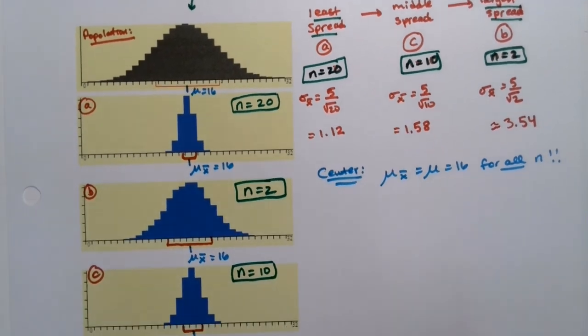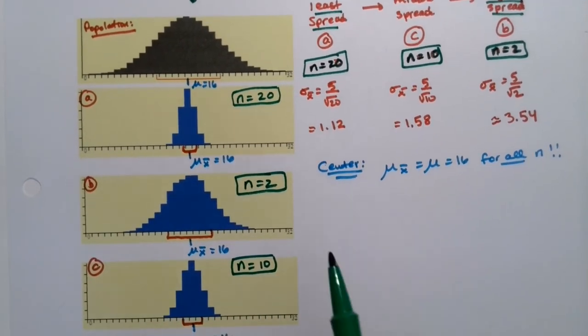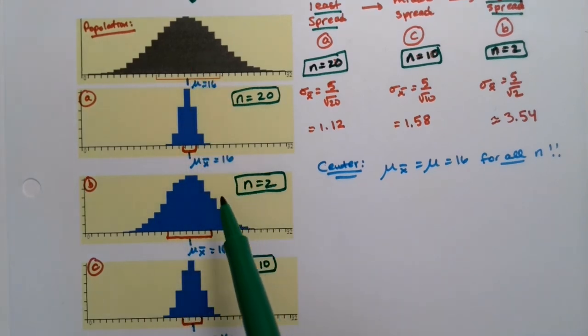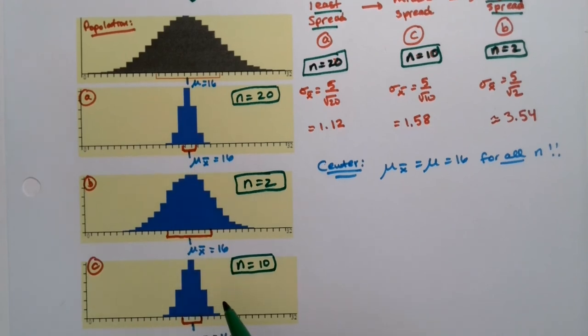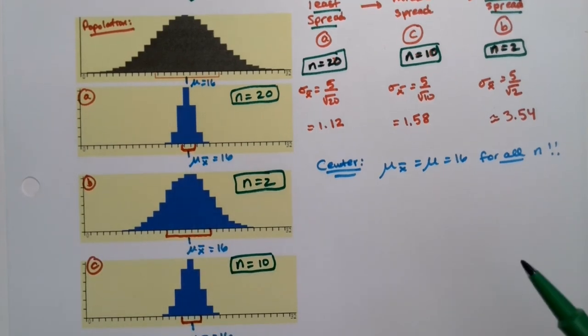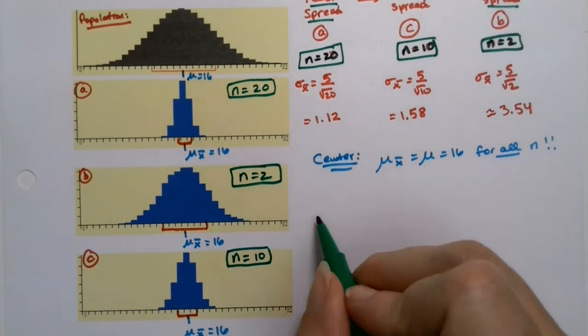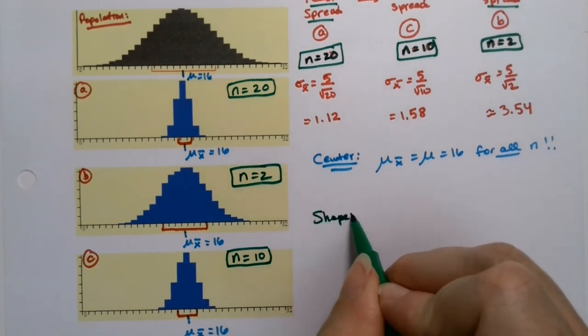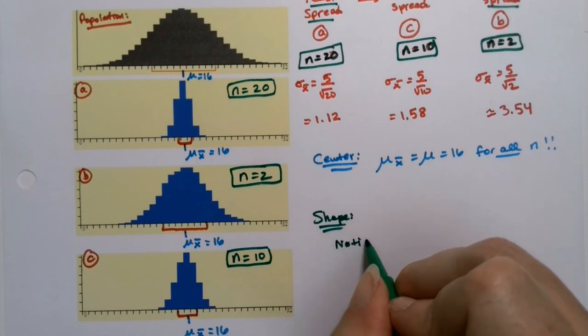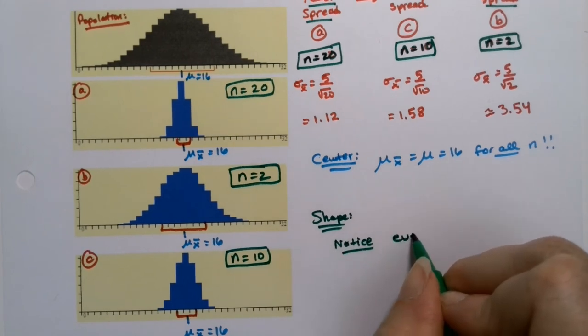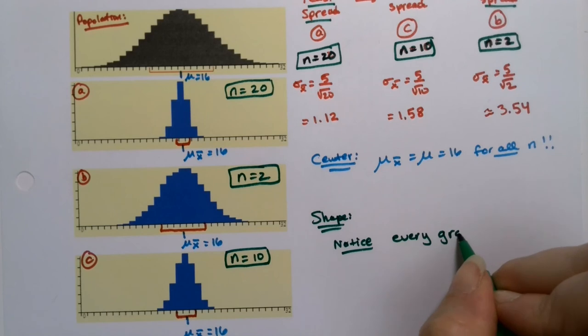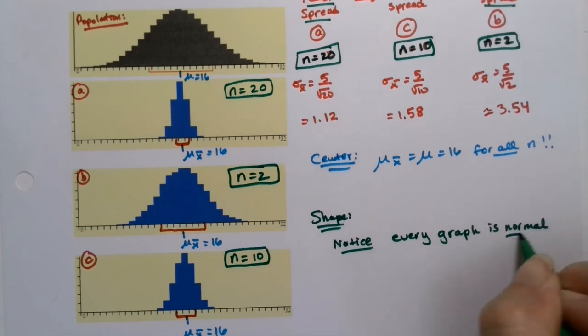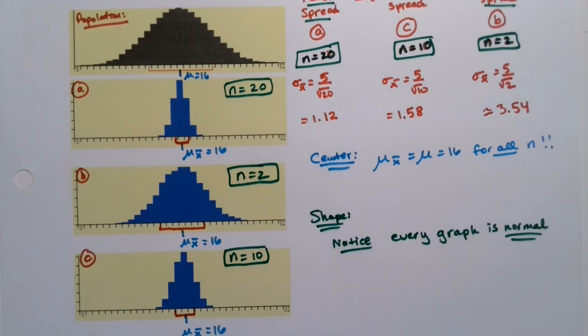Because it asks us, what do we notice about their shapes? And the answer is, they're all normal. The population was normal. n equals 2 is normal. n equals 20 is normal. Every single one of these is normal. That was not the case in the previous example when it was skewed. So when we want to look at the shapes, we want to notice every graph is normal, regardless of n.